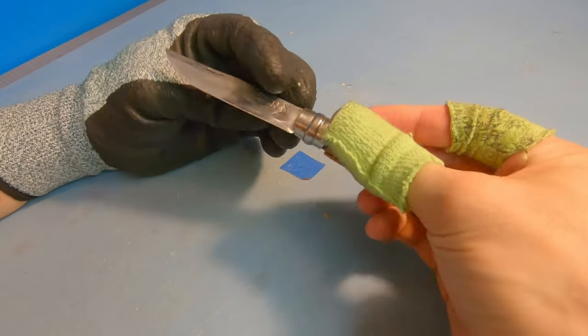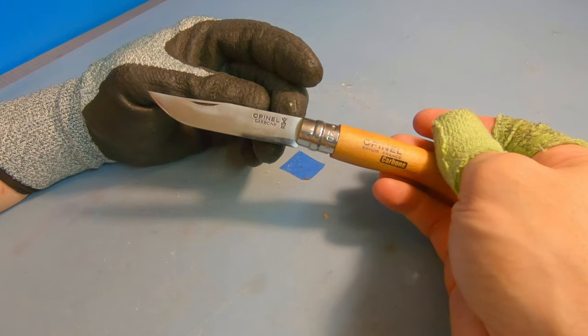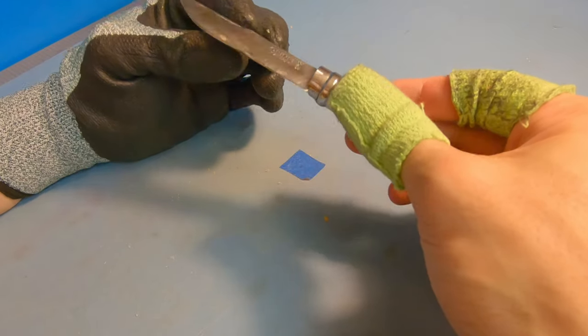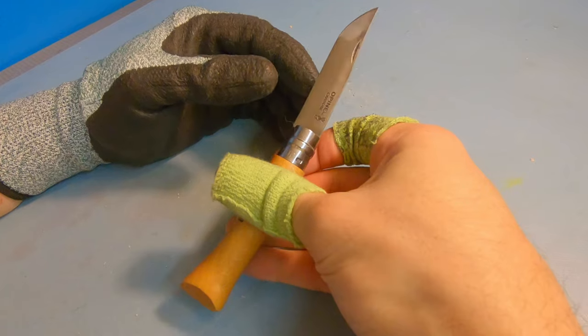Now this knife right here is one of my favorite knives I own. This is the Opinel carbon steel number seven. This is a high quality knife for an extremely affordable price.